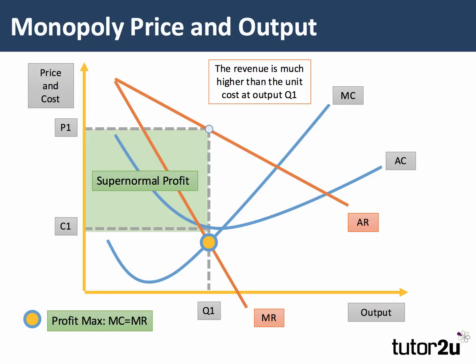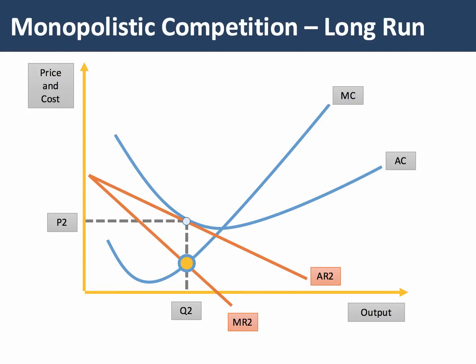Here's the classic monopoly diagram, showing a downward-sloping average revenue curve and marginal revenue. If we assume the monopolist aims to maximise profits, they'll price at P1 with a unit cost of C1 and make a substantial supernormal return. In the long run in monopolistic competition, although supernormal profits are available in the short term, the entry of new products is assumed to compete away those supernormal returns until we reach an equilibrium — a tangency at the profit-maximising output Q2 — where AR is tangent to AC. So at price P2, price equals average cost and only normal profits are made.